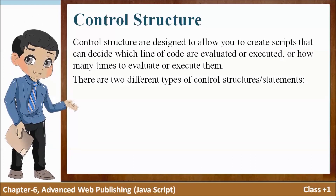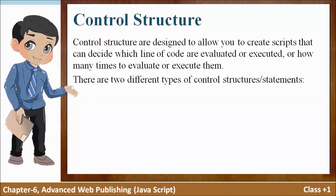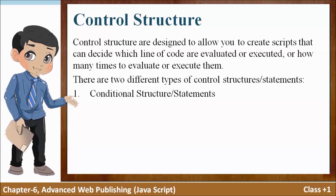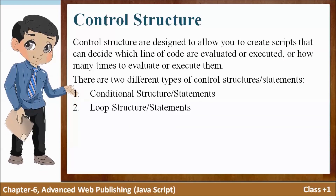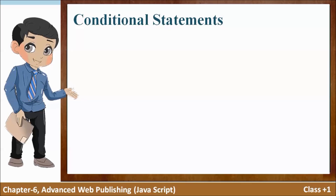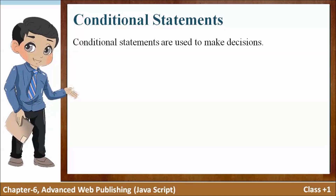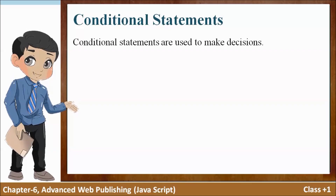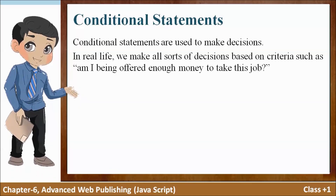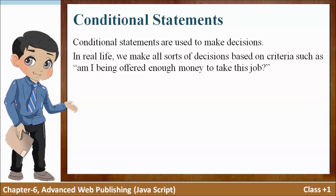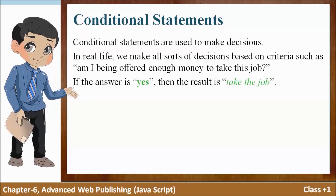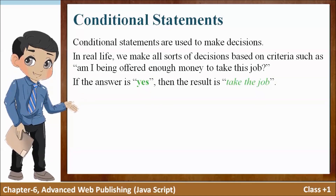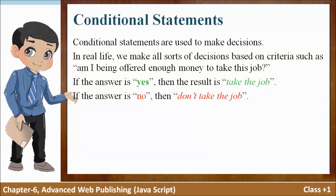There are two different types of control structures or statements. Control structures do alag-alag prakar ki hain: conditional statements or structure, and loop structure or statements. Next is conditional statements. Conditional statements are used to make decisions. In real life we make all sorts of decisions based on criteria, such as: am I being offered enough money to take this job? The answer is yes — take the job. If the answer is no — don't take the job.